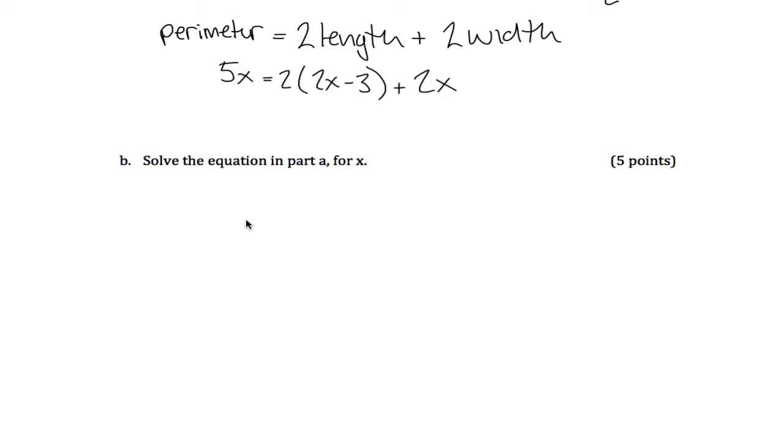In part b it wants me to solve this equation. I can solve it by first distributing. Distributing gets rid of these parentheses. You take this 2 and multiply it in, you get 4x minus 6 plus 2x. We can collect like terms, so we get 5x equals 6x minus 6.